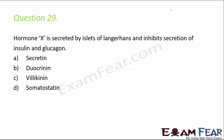Question number 29: hormone X is secreted by the islets of Langerhans and inhibits secretion of insulin and glucagon. The correct answer is somatostatin. Somatostatin maintains the level of insulin and glucagon in the blood.